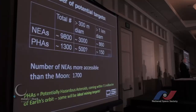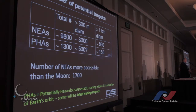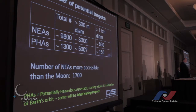We have a large number of potential targets, and the number is getting bigger all the time. The number of potentially hazardous asteroids is now about 1,300. The number of near-Earth asteroids that are known is now about 9,800, soon to top 10,000. Specifically, the PHAs represent not only the hazardous objects, but a subset of them represent the most accessible asteroids, and probably the ideal mining targets.